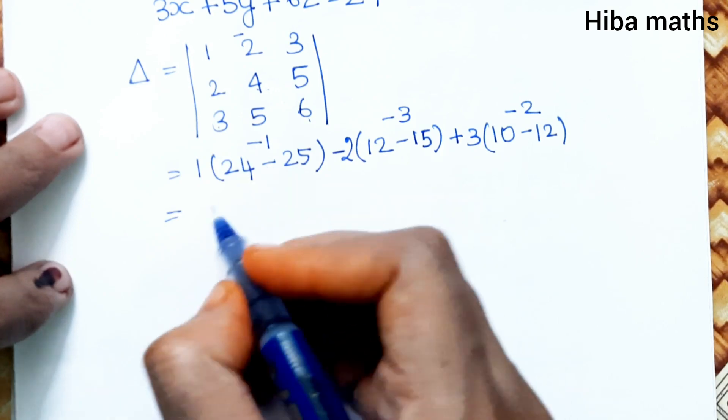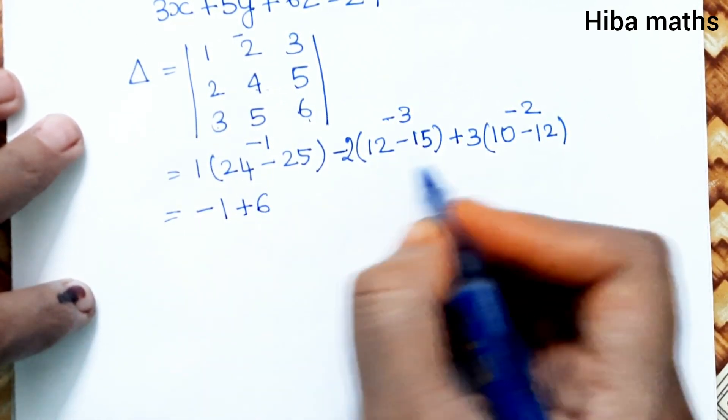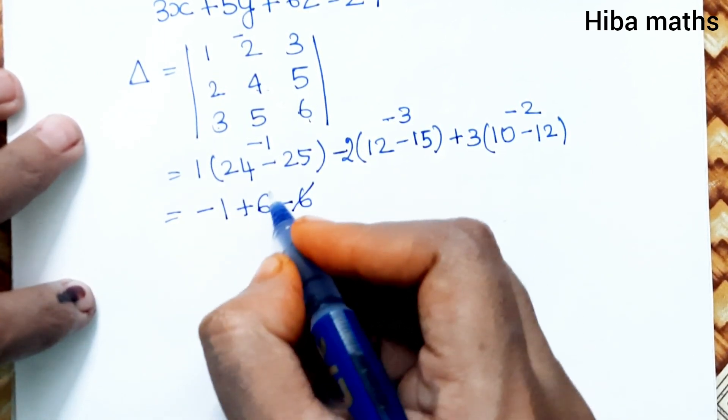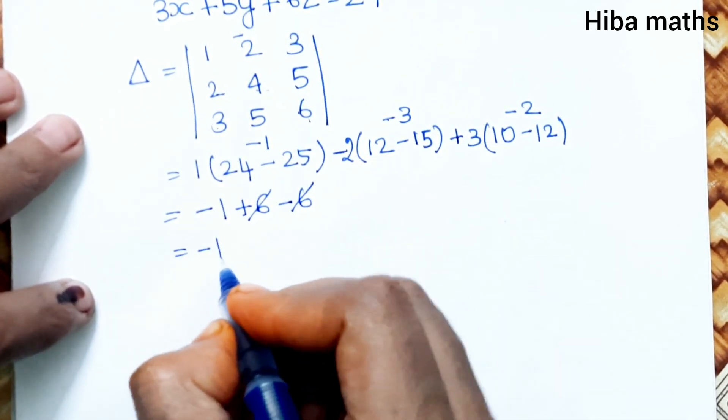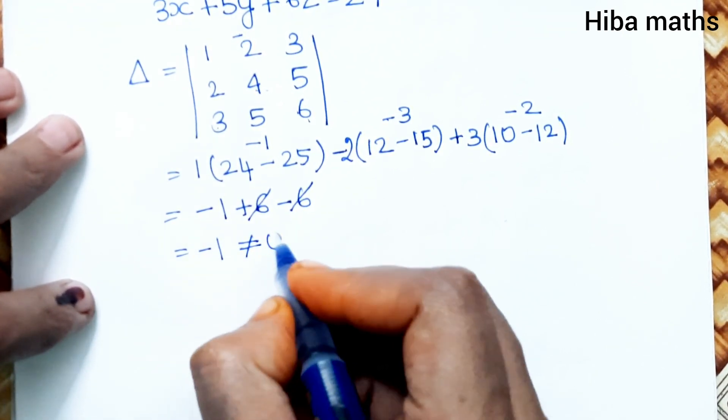Now solve: 1×(-1) minus 2×(-3) plus 3×(-2) equals -1 + 6 - 6 = -1, which is not equal to 0.